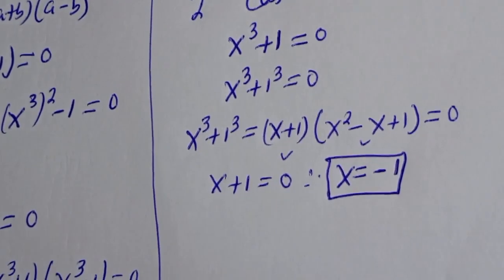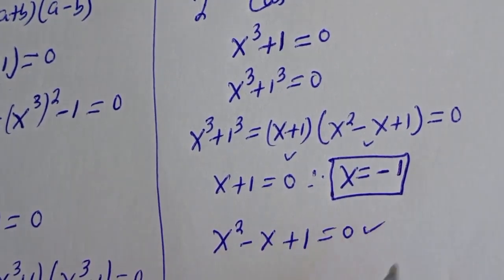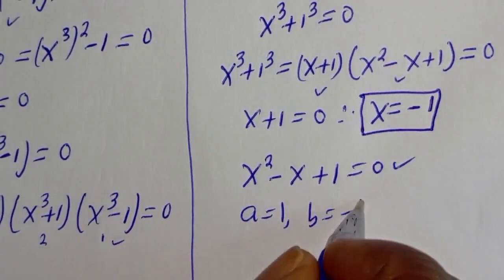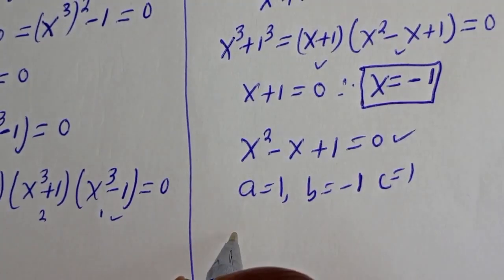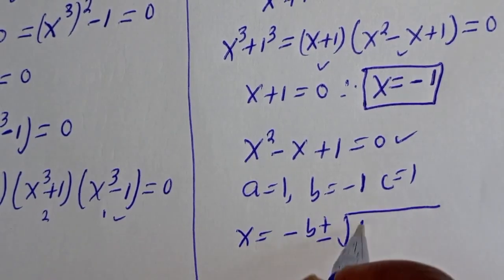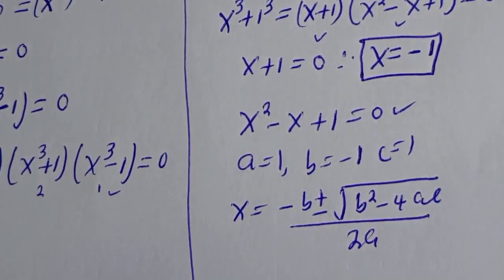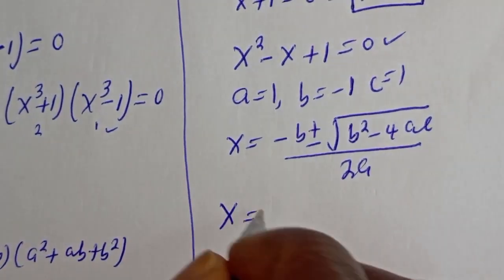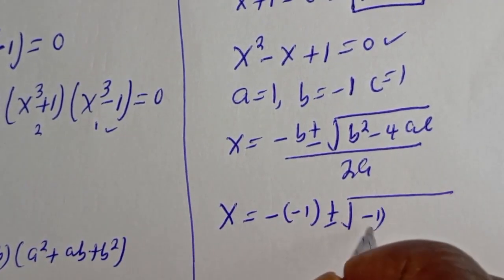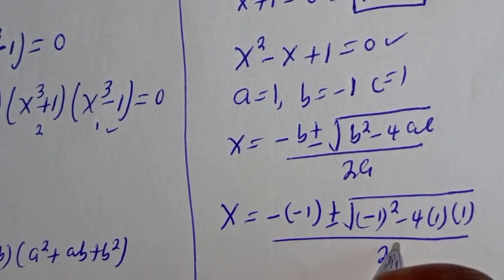Also from this case, s squared minus s plus 1 is equal to 0. This is a quadratic equation. Using the quadratic general formula with a equals 1, b equals negative 1, c equals 1: s equals negative bracket negative 1, plus or minus square root of negative 1 squared minus 4 times 1 times 1, over 2 times 1.